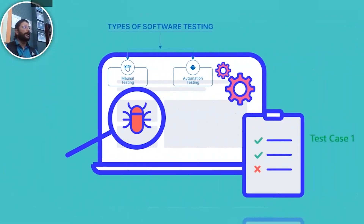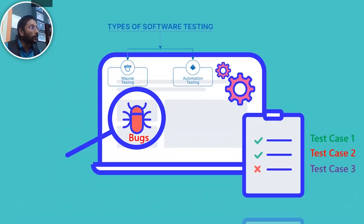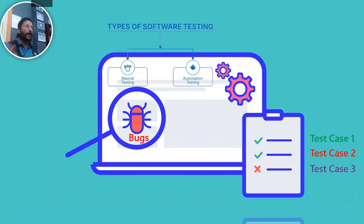The two most important aspects of testing in the software are username and password. You can check the manual testing and then you can do the test case. That is the manual testing. This is the automation testing — this is the software coding.